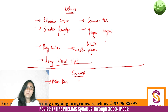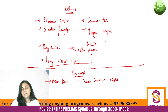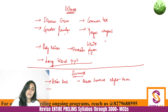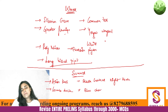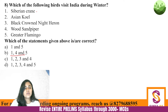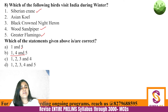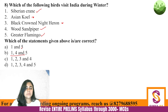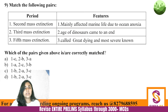Coming back to the answer: one, four, and five are correct — Siberian Crane, Wood Sandpiper, and Greater Flamingo are winter migratory birds. Asian Koel and Black Crowned Night Heron are summer migratory birds. There is no need to study all birds on the planet — just cover what is required.